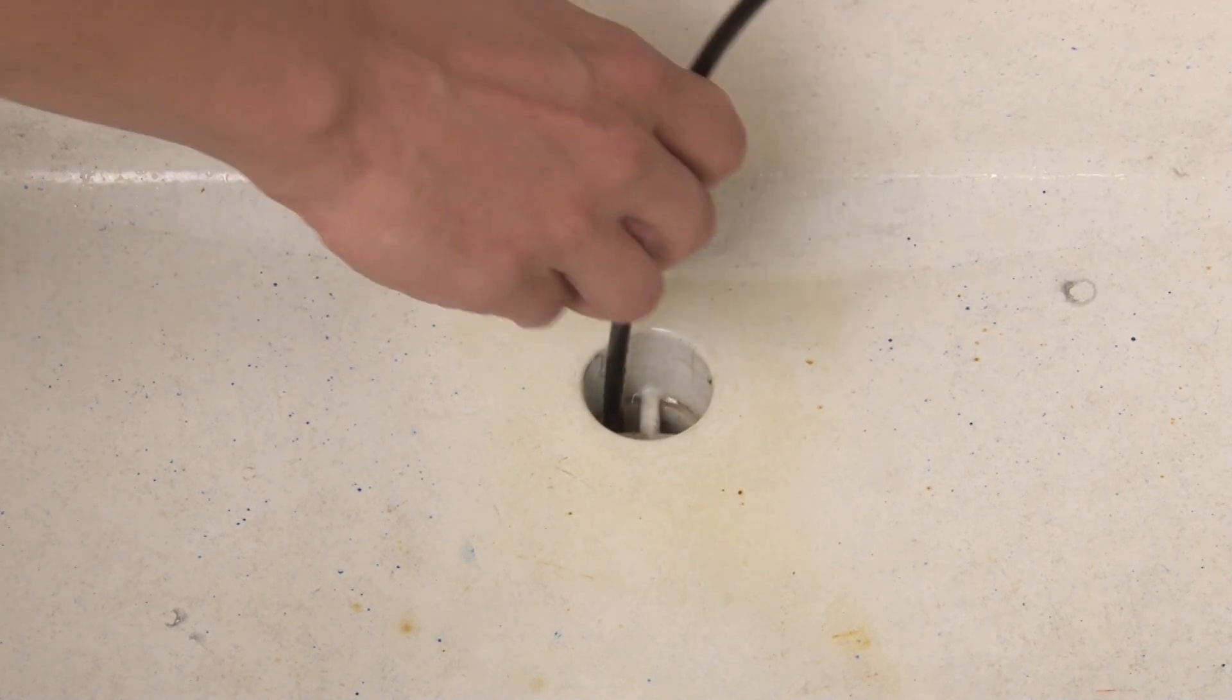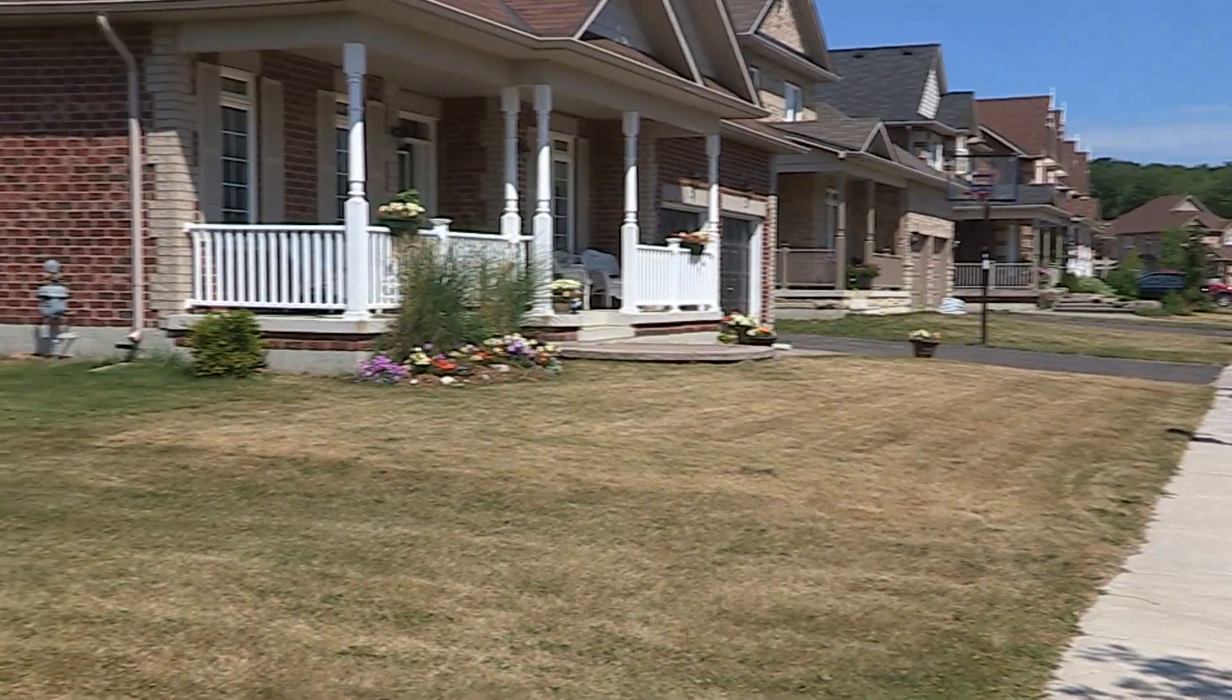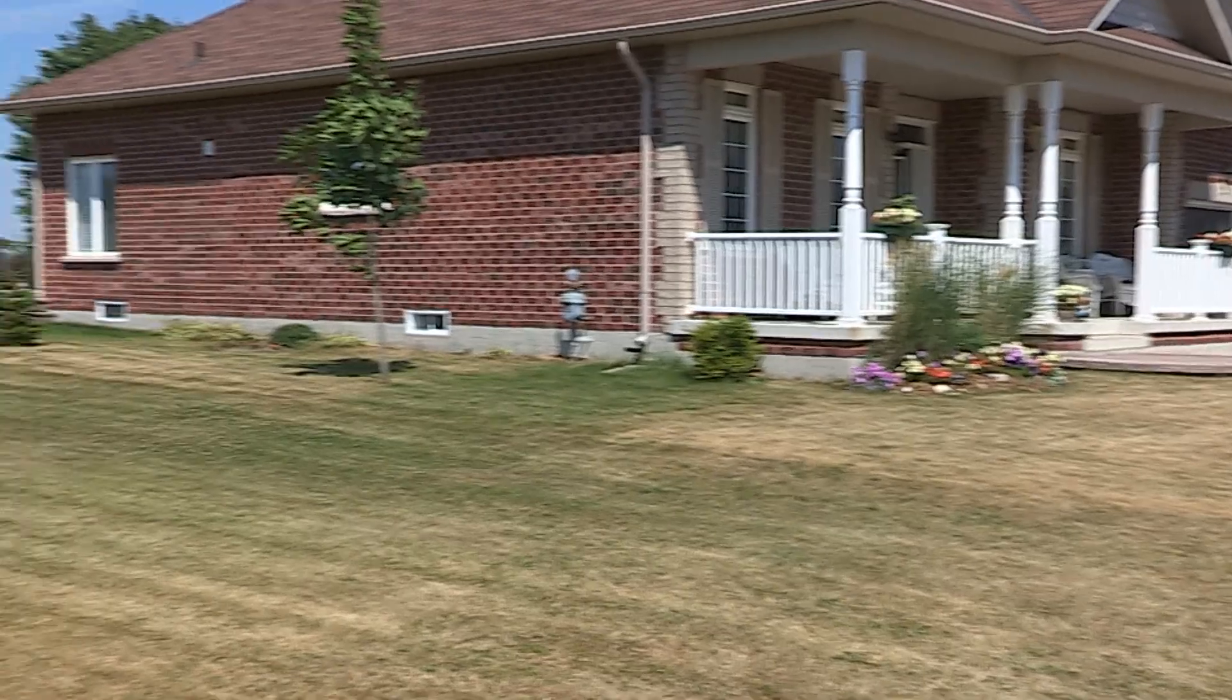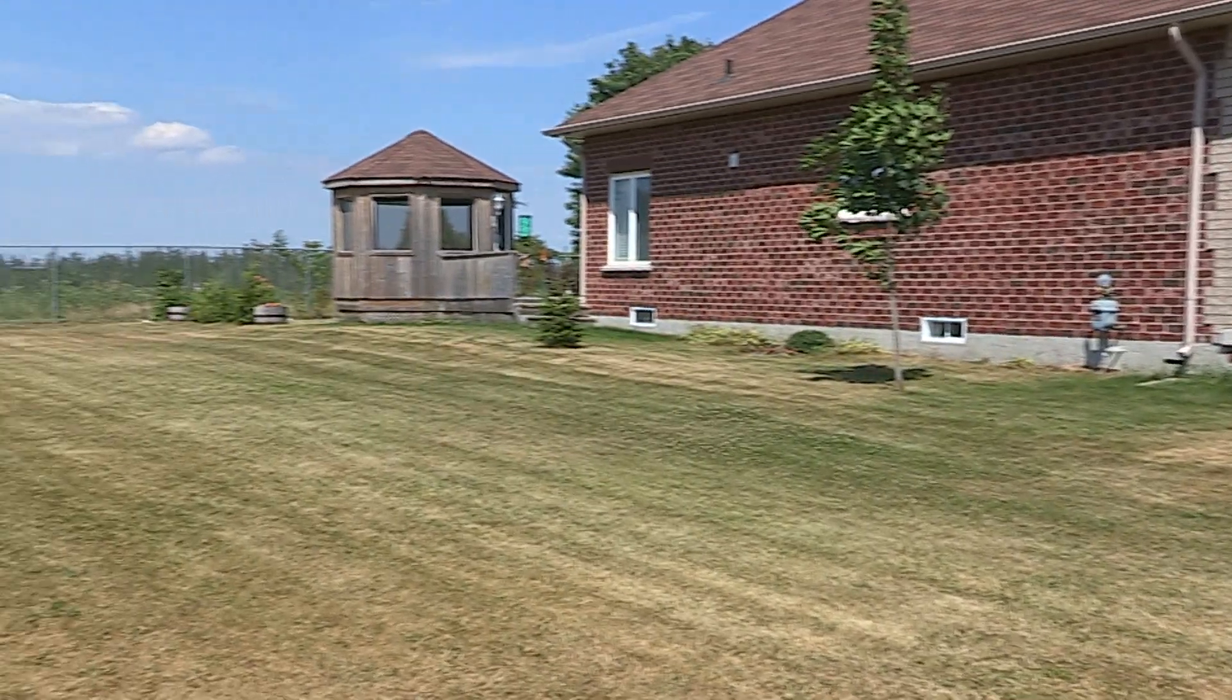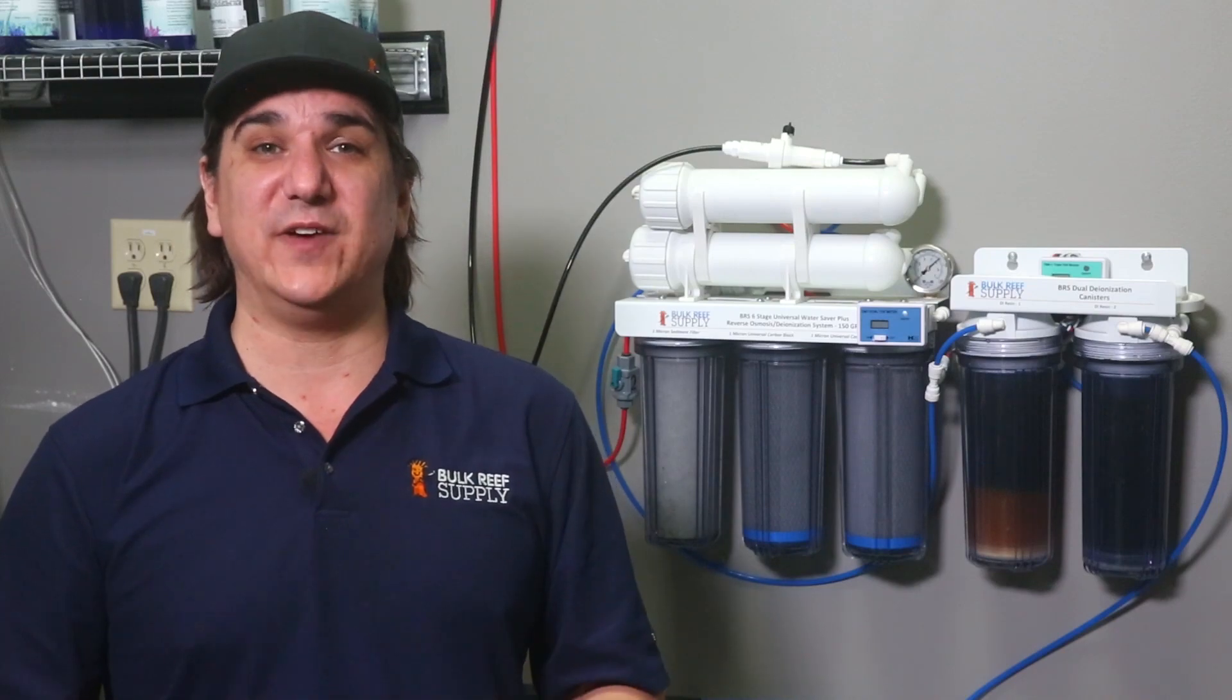As you can see, there is a pretty significant amount of waste water produced with RO systems, and that can be beyond what many people are comfortable sending down the drain, either because it is expensive, there are drought conditions and local ordinances which limit the amount of water you can use, as well as some pretty obvious environmental reasons. This is where the waste water staging comes in, or running the dual membranes in series in a water saver configuration by feeding the second membrane off the waste of the first. I think some of you might be pretty surprised by how well this configuration performs.